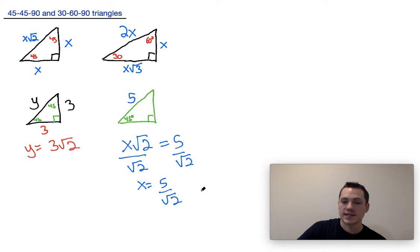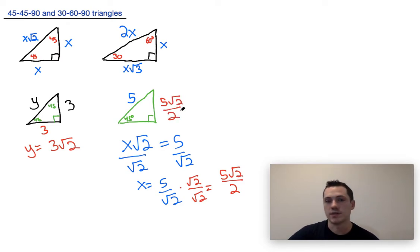And we would end up with x is equal to 5 over root 2. But the SAT doesn't like this answer. They want you to rationalize your radical in the denominator. So we would multiply this by root 2 over root 2. And when we do that, we end up with 5 root 2 divided by the square root of 4, which is just 2. So we end up with 5 root 2 over 2. Because x is the side opposite the 45 degree angle, we know that this side would equal 5 root 2 divided by 2.